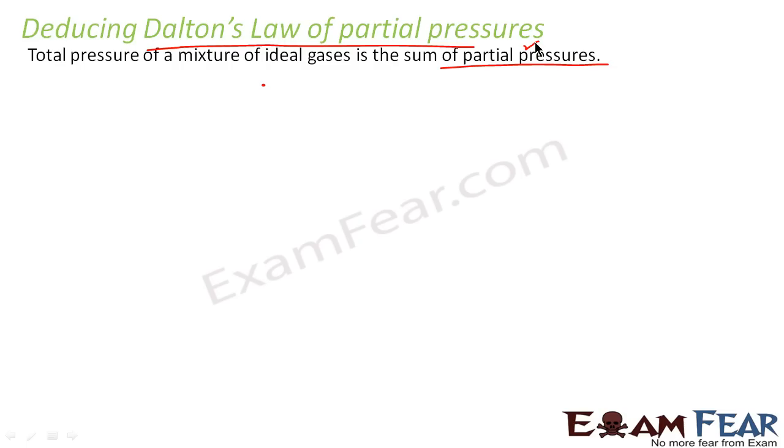So this law, that is Dalton's law, states that the total pressure of the mixture of A, B, C is equal to partial pressure of A plus partial pressure of B plus partial pressure of C.